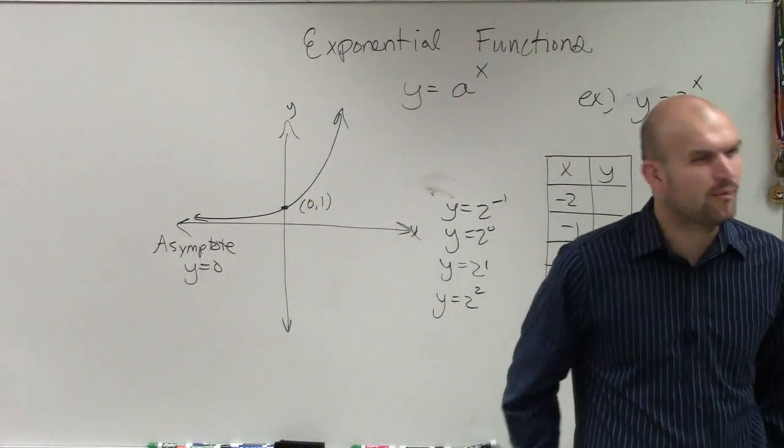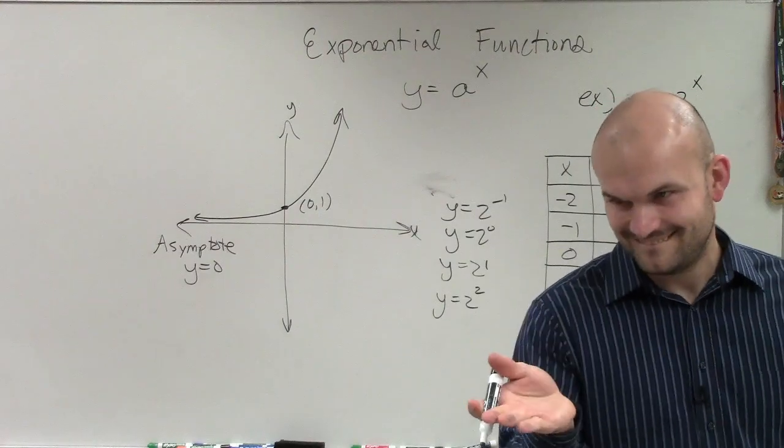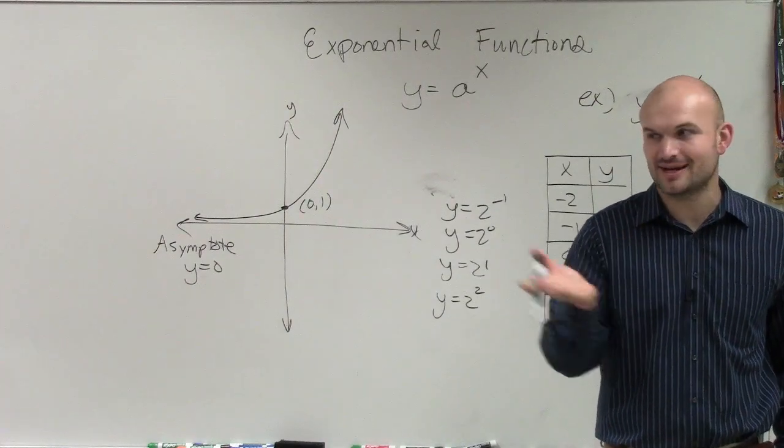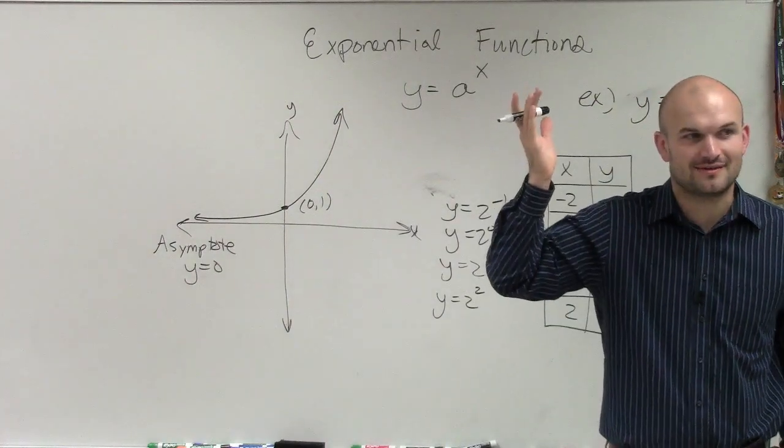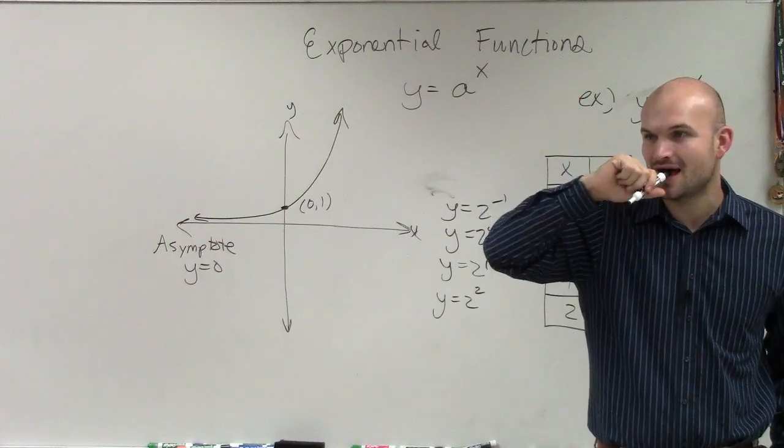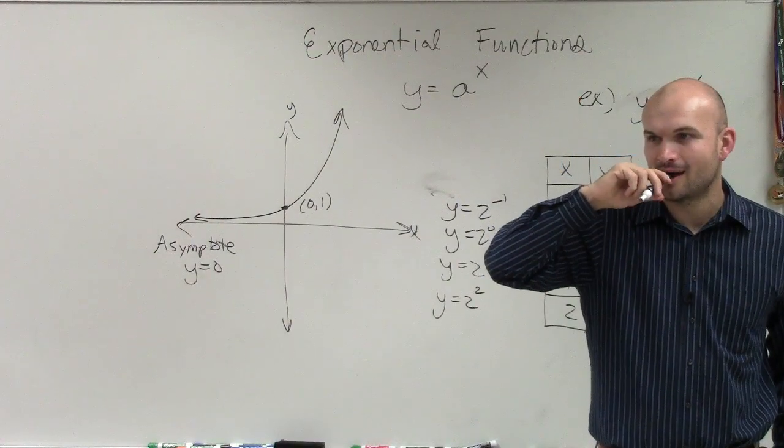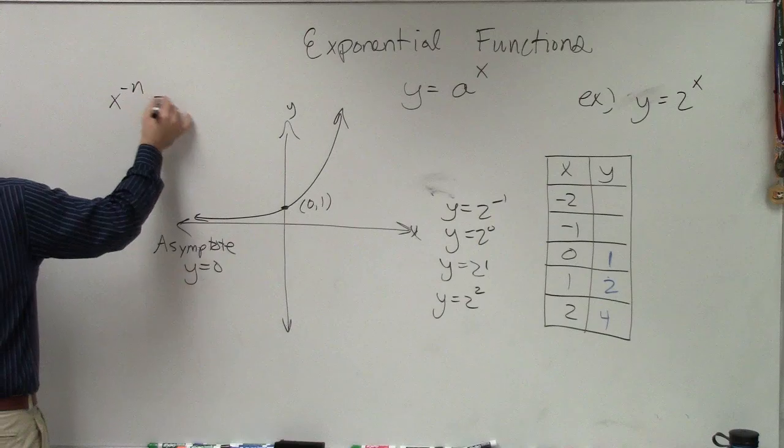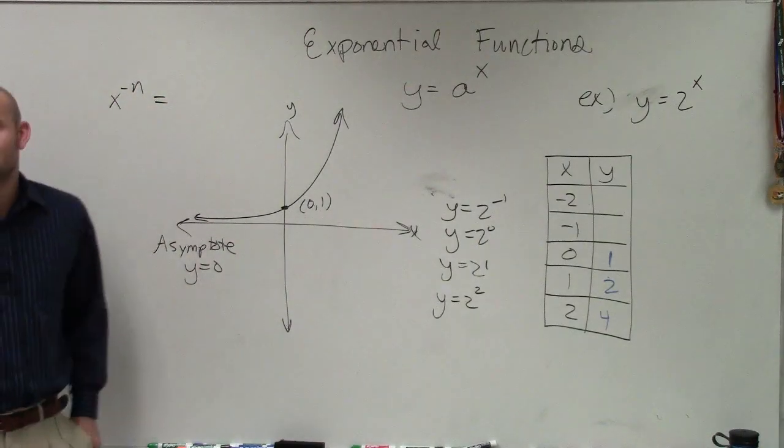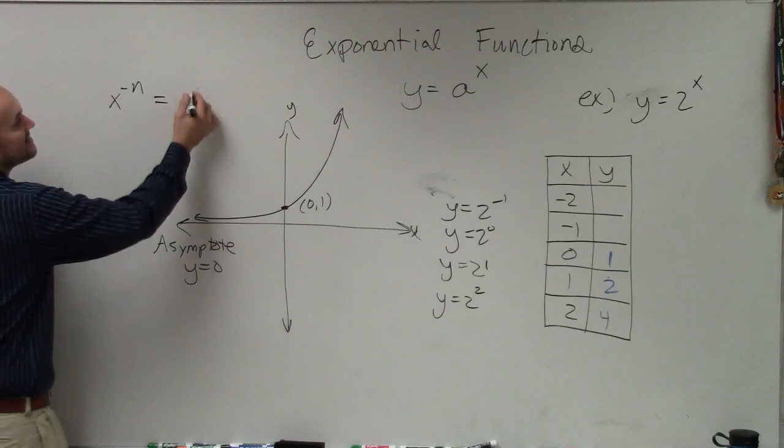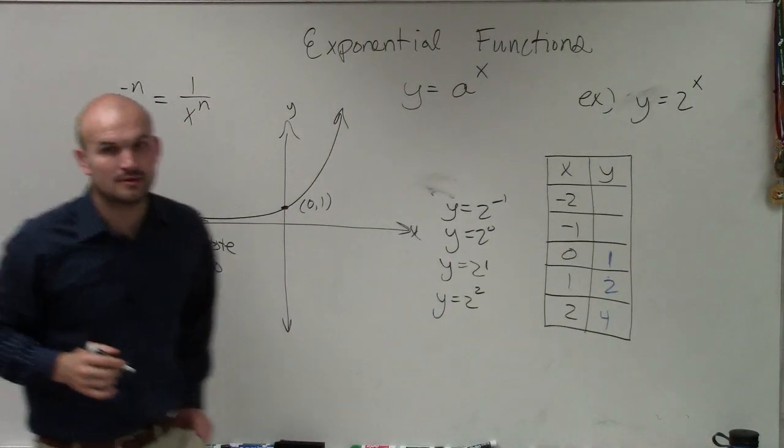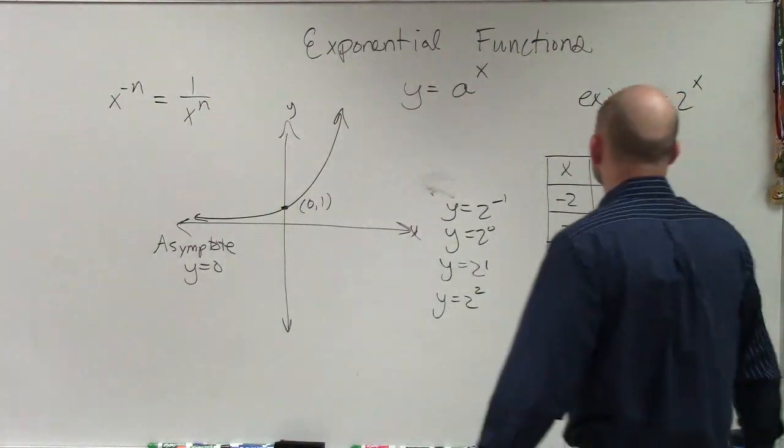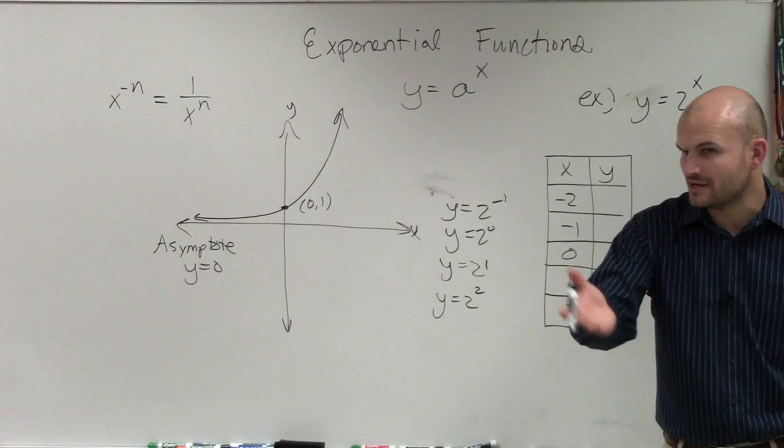So that's a very important note. It does not matter what your a is. a can be 99 million. You raise 99 million to the 0 power, it's going to have a y-intercept at 1, unless you are transforming the function in some form, which we'll get into next. Now we get to the fun ones. y equals 2 to the negative 1. Anybody remember? I got one answer for negative 2. I got one answer for 1 half. A couple things we need to remember about exponents.